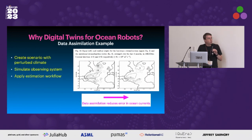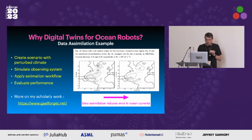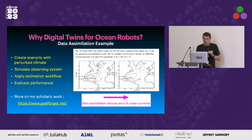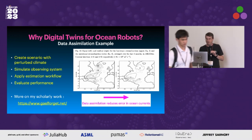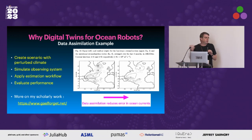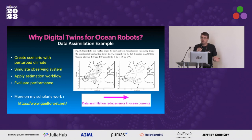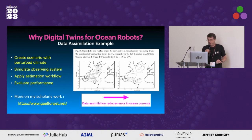Here's my one slide representing data simulation for machine learning. You create a scenario with a perturbed climate, looking at maps of ocean circulations. You simulate an observing system for that and apply an estimation workflow — in my case, adjoint-based curve fitting of a general circulation model to data — then evaluate the performance. What you see on the right-hand side is a decrease in error due to the data simulation, showing that data improves estimates of the real ocean. Doing this in a virtual world is nice because we know what the truth actually is.